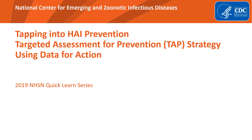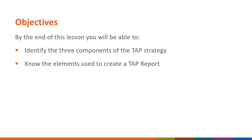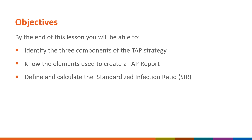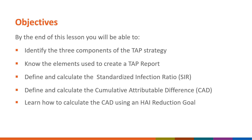In this Quick Learn, we discuss using the Targeted Assessment for Prevention Strategy, or TAP. We'll review the TAP Strategy and how generating reports can assess and guide HAI prevention efforts. By the end of the lesson, you will be able to identify the three components of the TAP Strategy, know the elements used to create a TAP report, define and calculate the Standardized Infection Ratio or SIR, define and calculate the Cumulative Attributable Difference or CAD, learn how to calculate the CAD using an HAI reduction goal, and learn how to create a TAP report in NHSN.